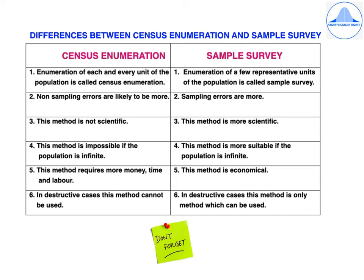Key differences between census enumeration and sample survey: Census considers each and every unit of the population; sample survey considers only a sample. Non-sampling errors are more in census enumeration; sampling errors are more in a sample survey. Census enumeration is not scientific, whereas sample survey is more scientific. Census is not possible if the population is infinite; sample survey is more suitable for infinite populations. Census requires more money, time and labour; sample survey is more economical. In destructive cases, census cannot be used, whereas sample survey can be used.